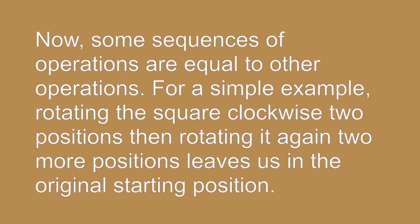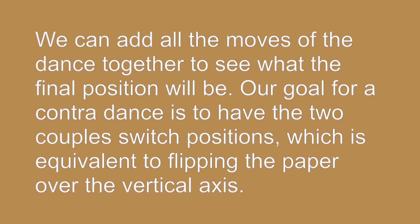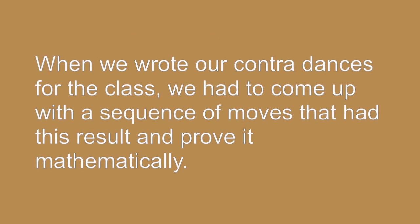Some sequences of operations are equal to other operations. For a simple example, rotating the square clockwise 2 positions, then rotating it again 2 more positions, leaves us in the original starting position. If we flip the square over the horizontal axis, then rotate it 2 positions, then flip it over the vertical axis, we are also back at our starting position. We can add all the moves of the dance together to see what the final position will be. Our goal for a Contra dance is to have the two couples switch positions, which is equivalent to flipping the paper over the vertical axis. When we wrote our Contra dances for the class, we had to come up with a sequence of moves that had this result and prove it mathematically.